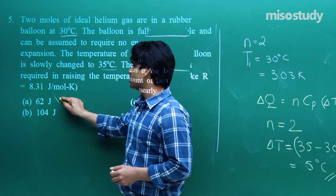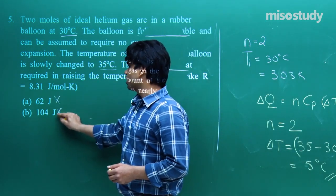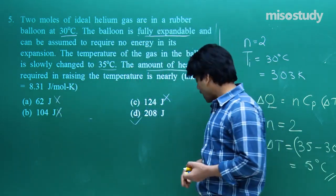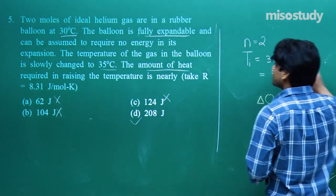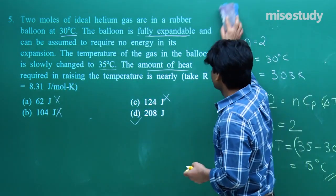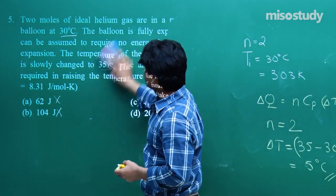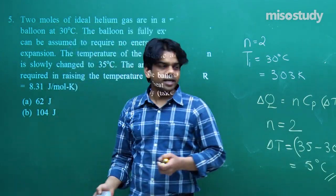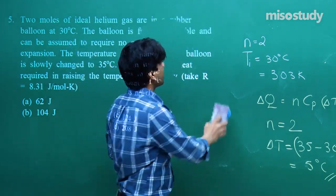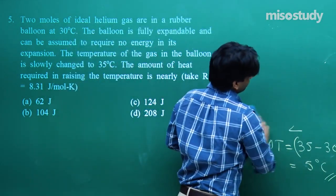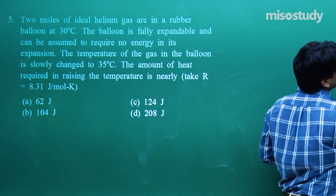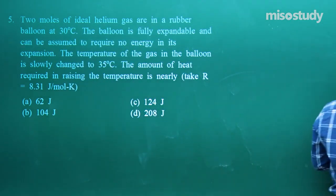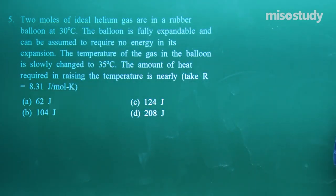All other options are incorrect. The key takeaway is using ΔQ = NCP·ΔT for heat energy supplied in an isobaric process. Hope you have understood how to solve such questions in thermodynamics.